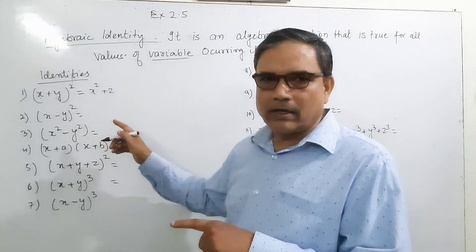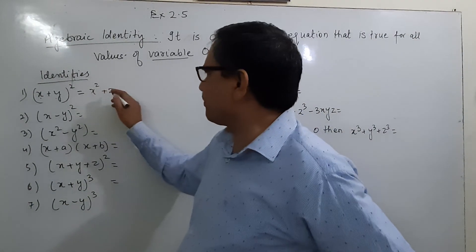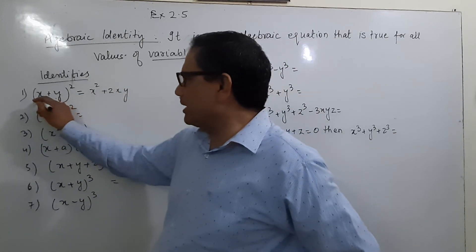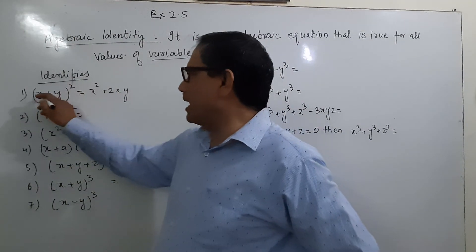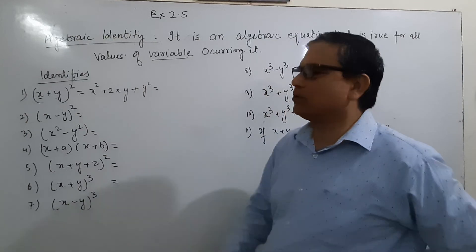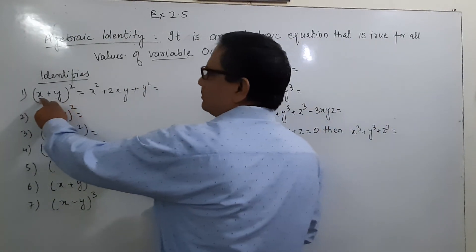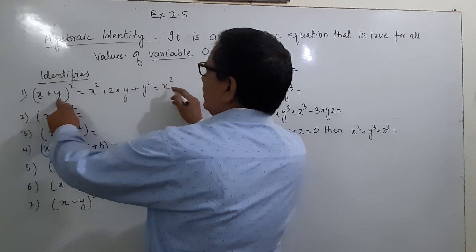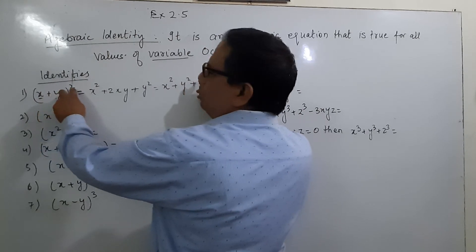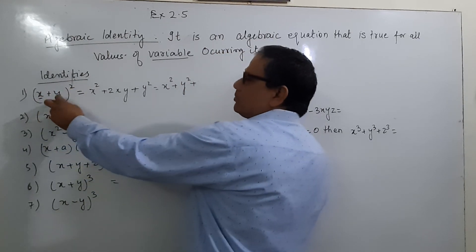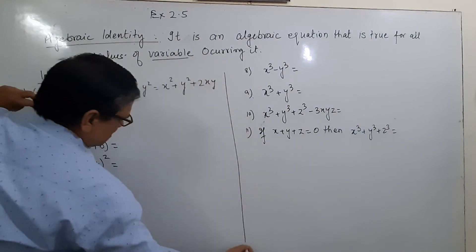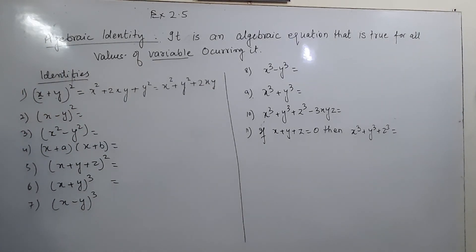As we expand (x+y)², the power of x decreases and the power of y increases. So we get x squared, then 2xy, then plus y squared. The easy way to remember: square the first term to get x², square the second term to get y², then add 2xy in the middle. So (x+y)² = x² + 2xy + y².